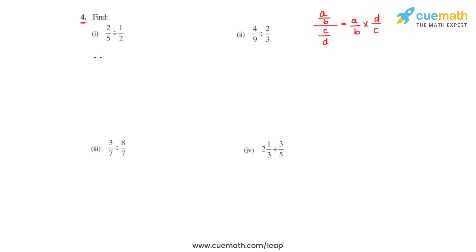Starting with the first bit, we have 2/5 divided by 1/2. So we write 2/5 times 2/1, and that gives us the answer as 4/5.